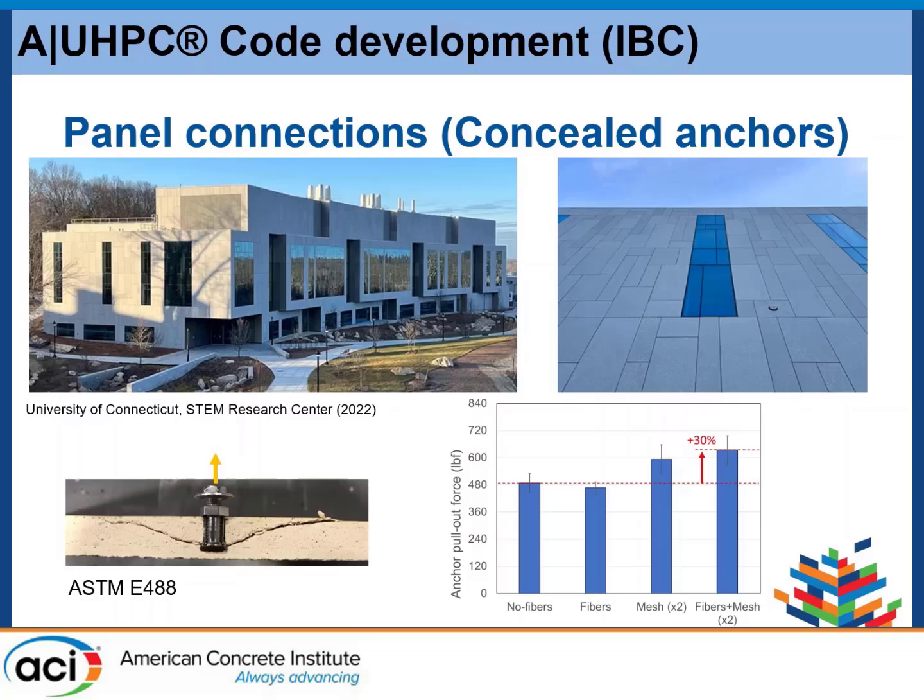This is very important for facade design. You can see: with UHPC and no fibers, you have a baseline pull-out value. Add fibers, and you get a similar force with a little post-cracking behavior. Add just the mesh with UHPC, and you see a jump in load value. Combine both fibers in the matrix and the mesh, and you get at least a 30% increase in pull-out force. This is a significant benefit for facade design. An example is the University of Connecticut project recently finished, which looks like a stone wall with no visible attachments.